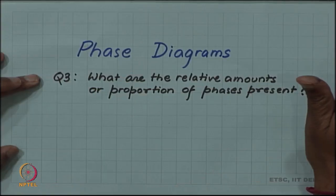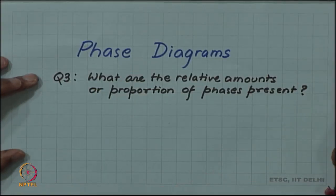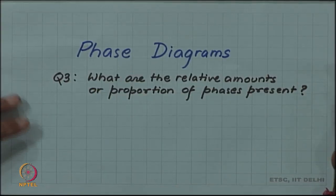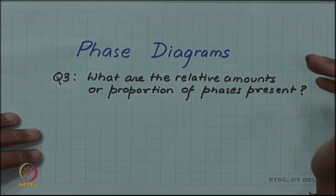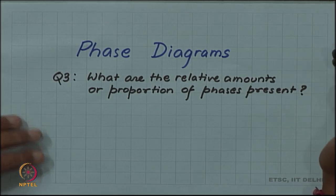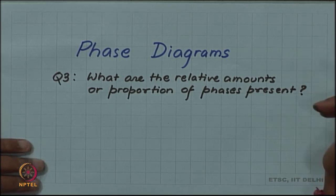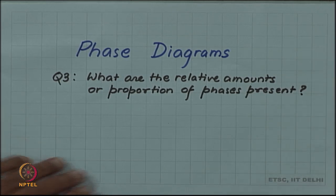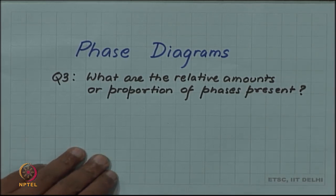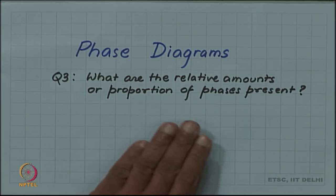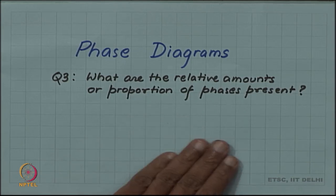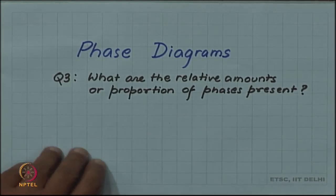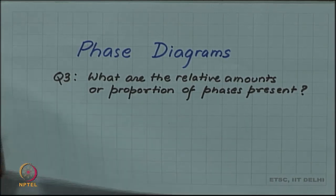Let us now take up the third and final question from our list of questions which our phase diagram can help us answer. The third question is: what are the relative amounts or proportions of the phases present?